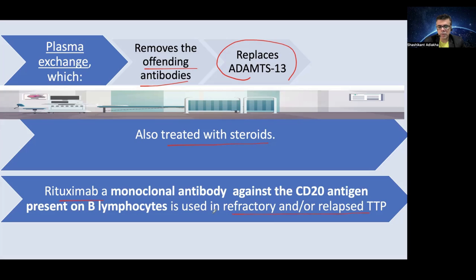Rituximab has also been successfully tried in refractory and relapsed TTP. Rituximab is a monoclonal antibody active against the CD20 antigen on B lymphocytes, helping to decrease autoimmunity and the immune response, thereby causing successful alleviation of TTP symptoms.